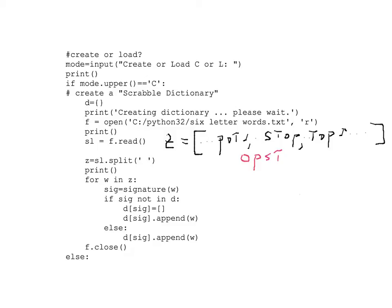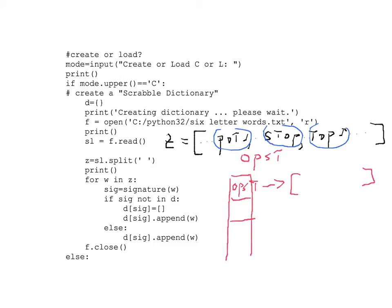We want to create this dictionary. We can imagine it as a long list of signatures. When we look for O-P-S-T, what we're going to associate with it is a list containing all those words. When you use this, you type in something that becomes the signature, and it gives you all the valid words — in this case, a list containing pots, stop, and tops. That's basically the idea.